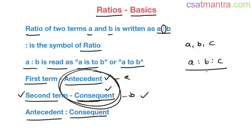These two terms are used only when two quantities are given. With three terms, we simply call them first term, second term, third term, or first quantity, second quantity, third quantity.